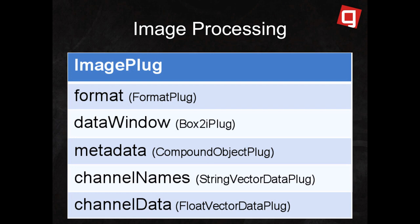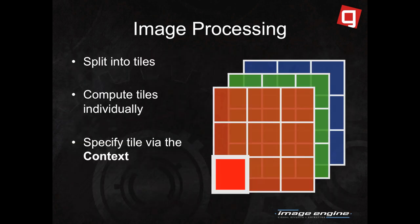So how does Gaffer perform multi-threaded image processing? In Gaffer, an image is just a compound plug which contains a child plug for each aspect of the image. Computation of each child occurs separately. Computing the first four here is pretty easy — most of the time they're just loaded out of the file and passed through the graph unchanged. But we don't want to compute the channel data — the pixels — for the whole image at once. We might only want to see part of the image, and we definitely want to multi-thread it. So we split the channel data into tiles and compute them individually. Each tile can be computed on a separate thread, and we use the context to identify which tile is being requested. So typically you fire up a bunch of threads, compute the tiles until you have everything you wanted — and that's exactly what the viewer does.